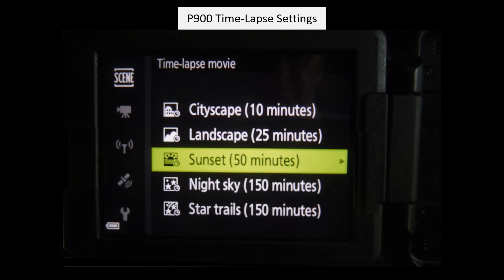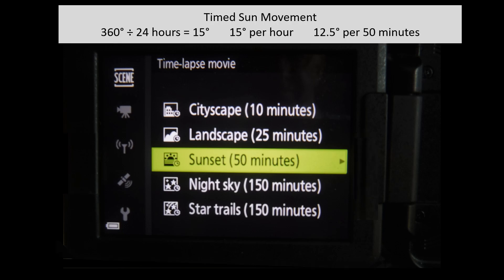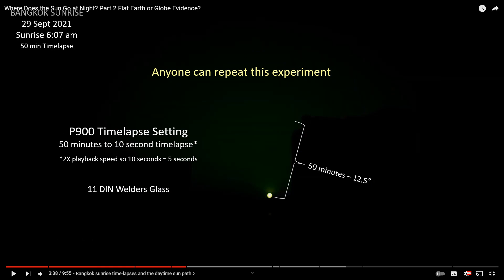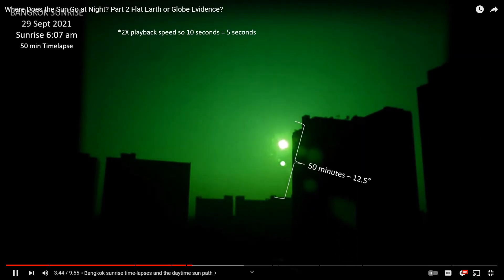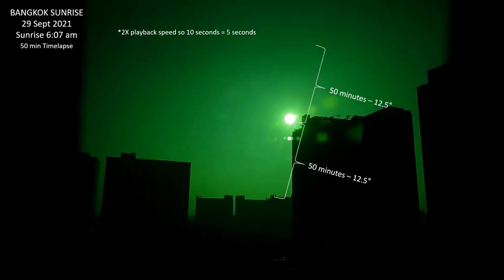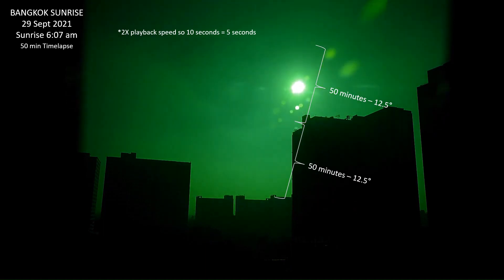So I used my P900 sunset time-lapse setting, which takes a series of photographs for 50 minutes and turns it into a 10-second video. Now since the sun moves at 15 degrees per hour, then I should see a constant 12.5 degrees per every 50 minutes. I'm going to start with two sunrise time-lapses. And I'm using a live-and-in welder's glass to cut down on the glare. And remember, anybody can repeat this experiment. So the first time-lapse started with the sun just right above that building.